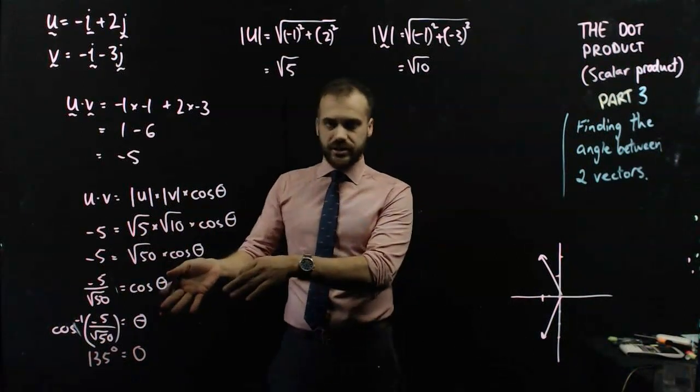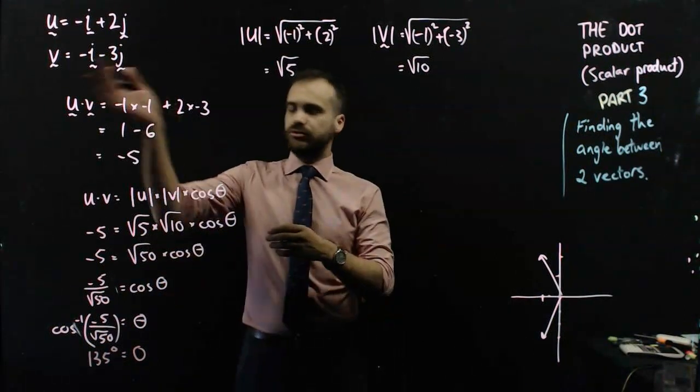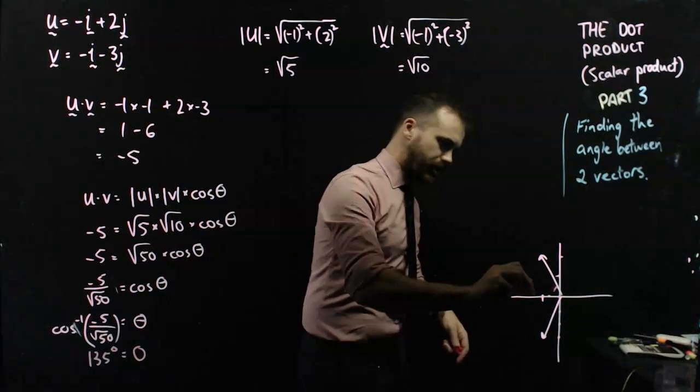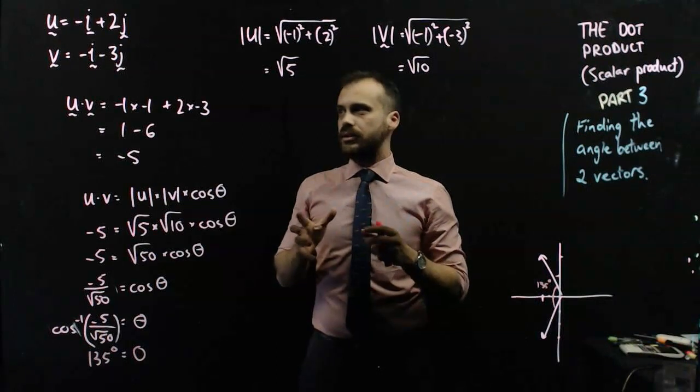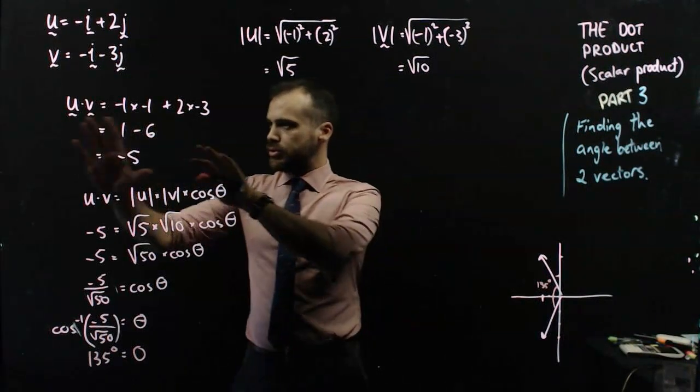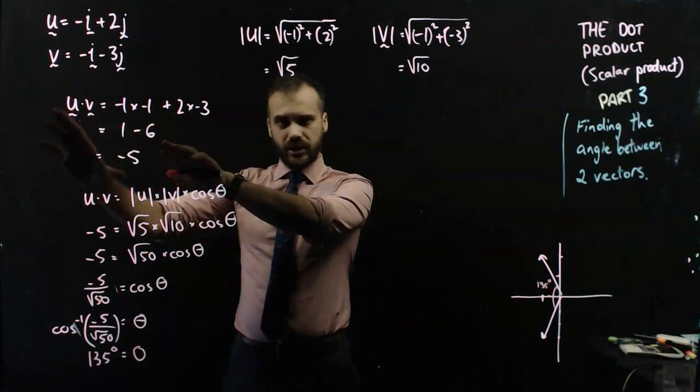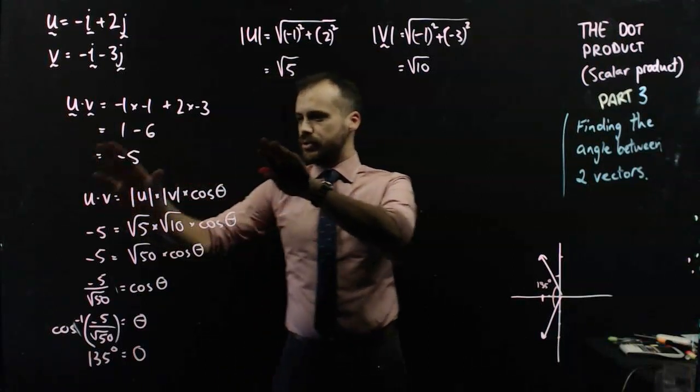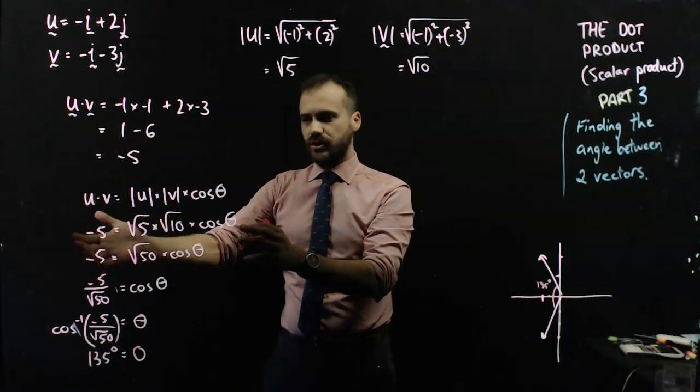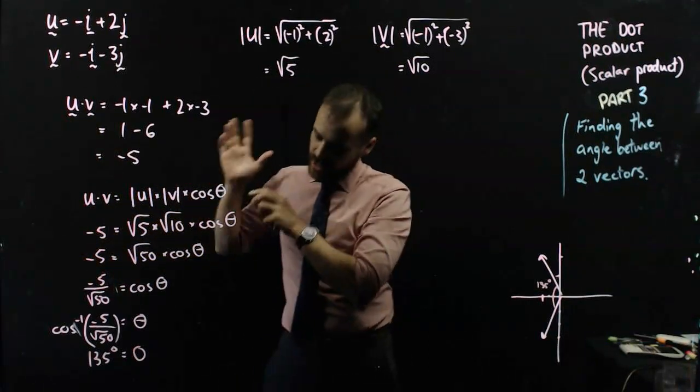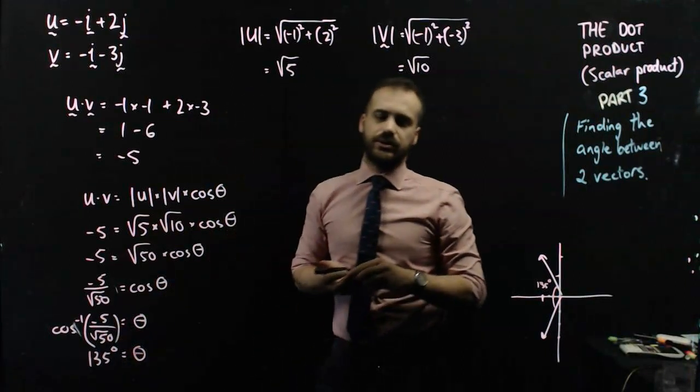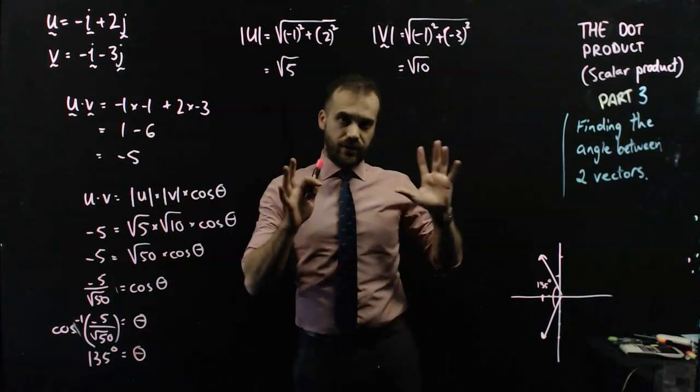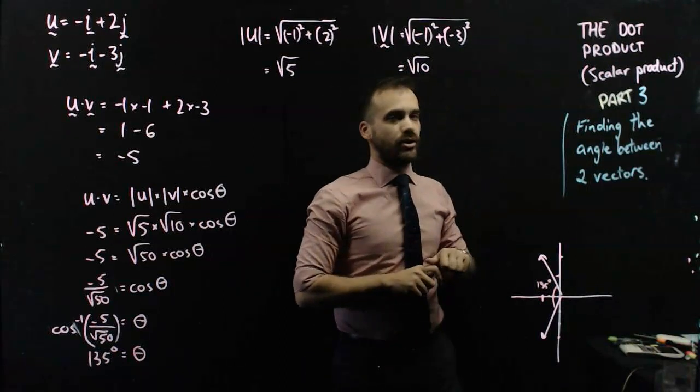Now, is that right? Probably, because I drew it at the start, and that looks like it's probably 135 degrees. So, I'm going to count that as a win. That's using one formula for the dot product, using the second formula for the dot product, rearranging, and then finding that angle right there, theta is equal to 135 degrees. That is our third and final installment of the dot product.